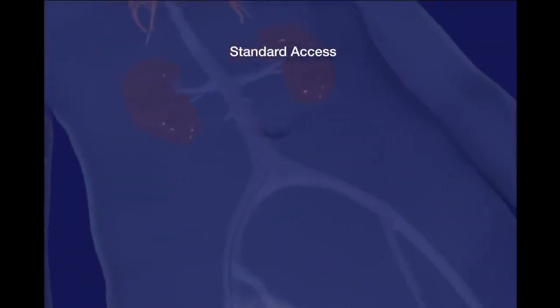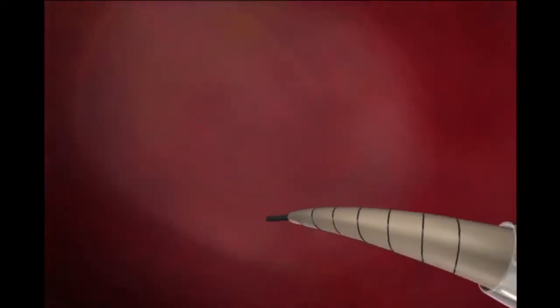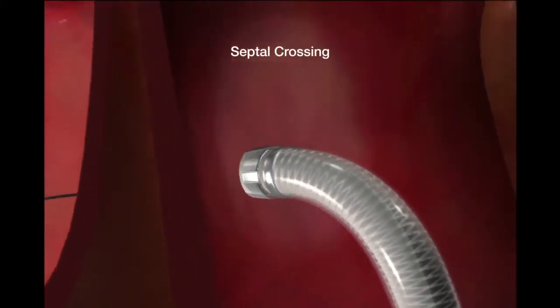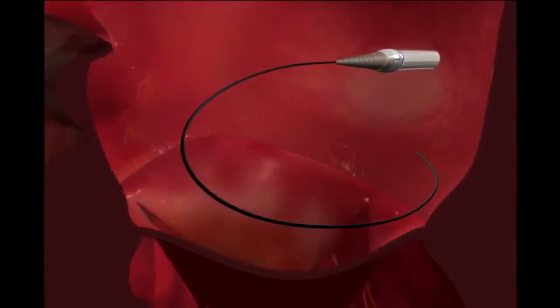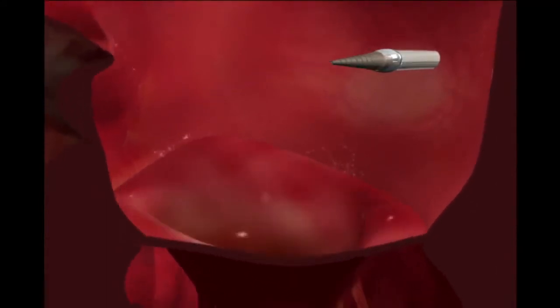The catheter is introduced over a guide wire that has been placed using standard techniques. The dilator is used to gradually advance the guide into the left atrium. The guide wire and dilator are removed.